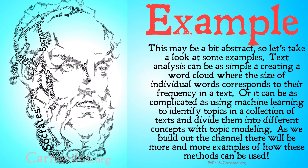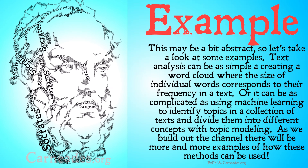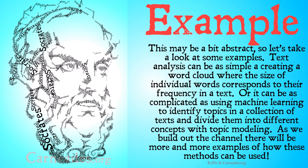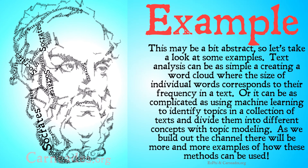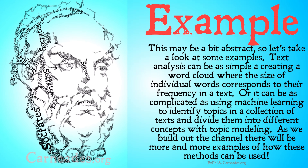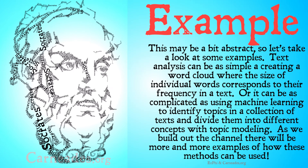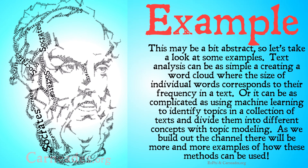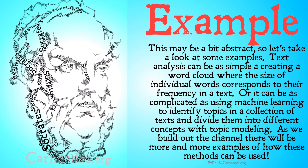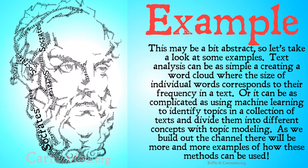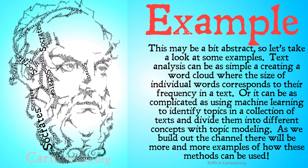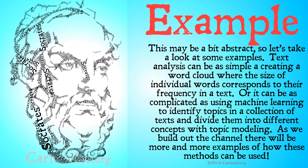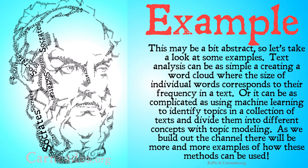This may be a bit abstract, so let's take a look at some examples. Text analysis can be as simple as creating a word cloud where the size of individual words corresponds to their frequency in a text — most folks have probably encountered a word cloud, and it's the most common form of text analysis. But they can also be as complicated as using machine learning to identify topics in a collection of text and divide them into different concepts with topic modeling, basically asking a computer to take a bunch of texts and try to group them based on similarities that the program sees. Then it's an interesting question: does the computer group them the same way a human would? Does the computer see different patterns or the same patterns? As we build out this channel, there will be more and more examples of all of these methods and how exactly they can be used.